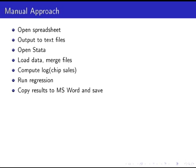One approach most people have learned is not a good one: open the spreadsheet, hit save as, output worksheets to text files, open Stata, load the datasets, merge them, compute the log of chip sales, run the regression, do a select all, copy the output to Microsoft Word, save it, close everything, delete the files you made along the way, and go write your paper. That's the fully hands-on manual approach — no steps are automated.